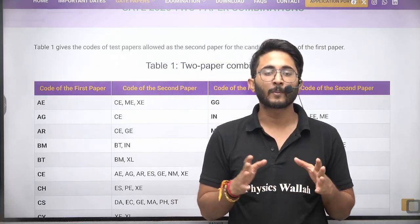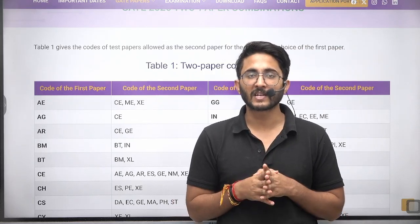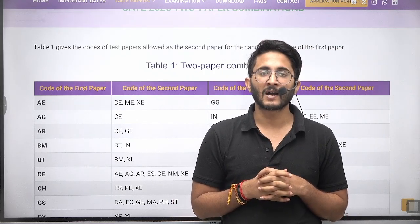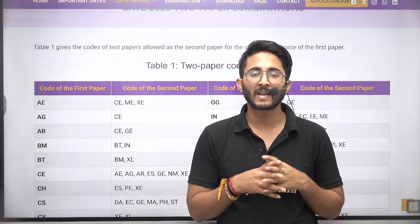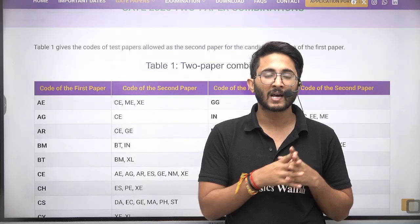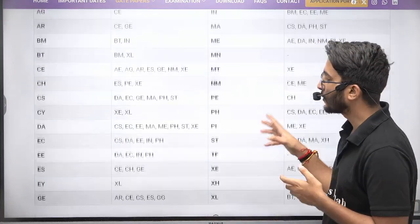So guys, two paper combination is finally available on their official website and there is specifically mentioned like if any unfortunate circumstances come and they said while making the schedule there is some problem, then they can also change it. But like last year it changed, but most probably every year the combination remains the same.